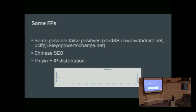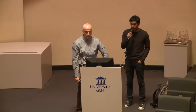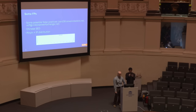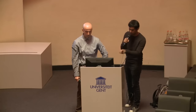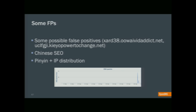We also run into false positives. Two examples were Chinese SEO sites. We identified them as false positives for two reasons: first, a lexical reason — the domain names contained pinyin, the romanization of Mandarin with specific character strings carrying Mandarin meanings. Second, when we looked at the IP distribution, the IPs visiting these domains were also visiting other Chinese SEO domains that were spiking within the same hour.